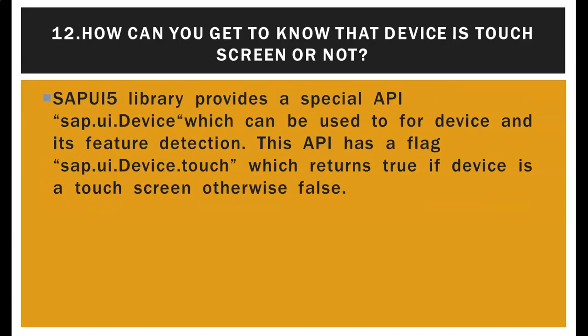How can you determine if a device is a touch screen? The SAP UI5 library provides a special API called sap.ui.Device which can be used for device and feature detection. This API has a flag sap.ui.Device.touch which returns true if the device is a touch screen, otherwise false.